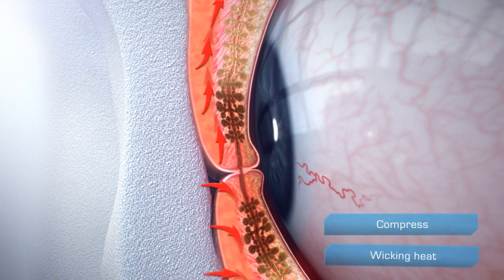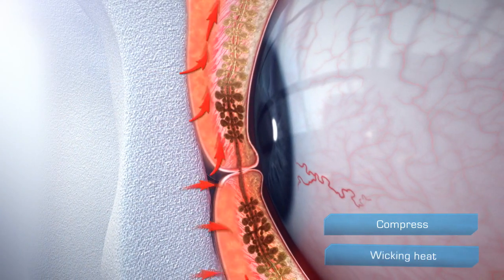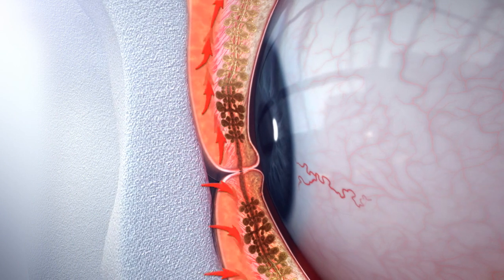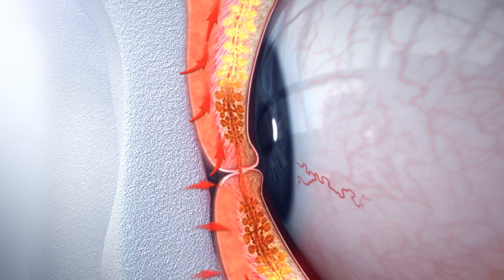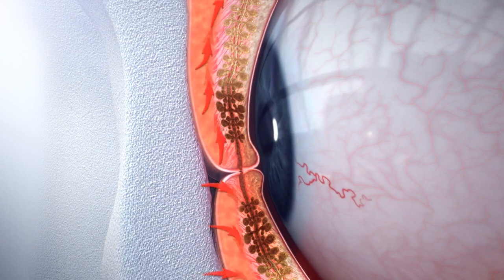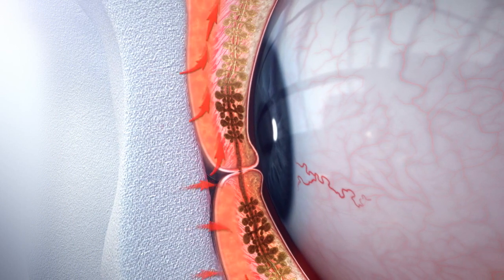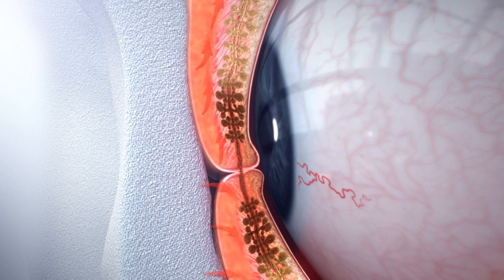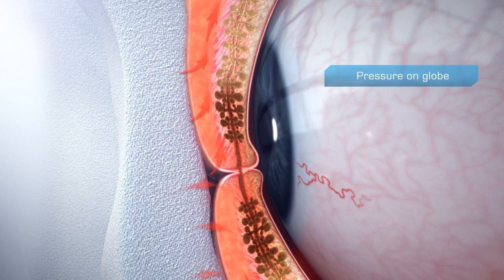Heat is wicked away by blood vessels in the eyelids, limiting the amount of heat reaching the meibomian glands. Beyond the lack of effectiveness and the onerous routine for the patient, use of warm compresses can introduce excessive pressure on the globe.